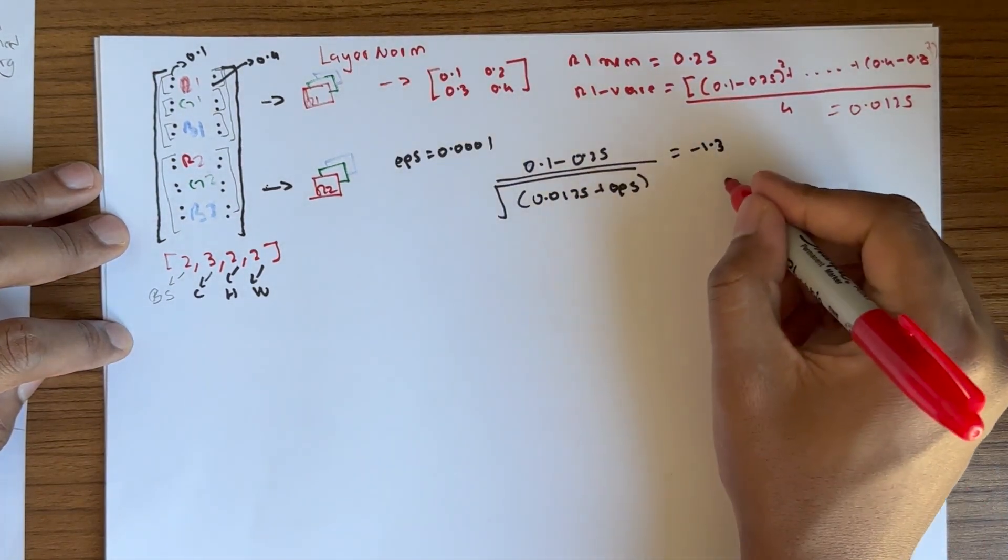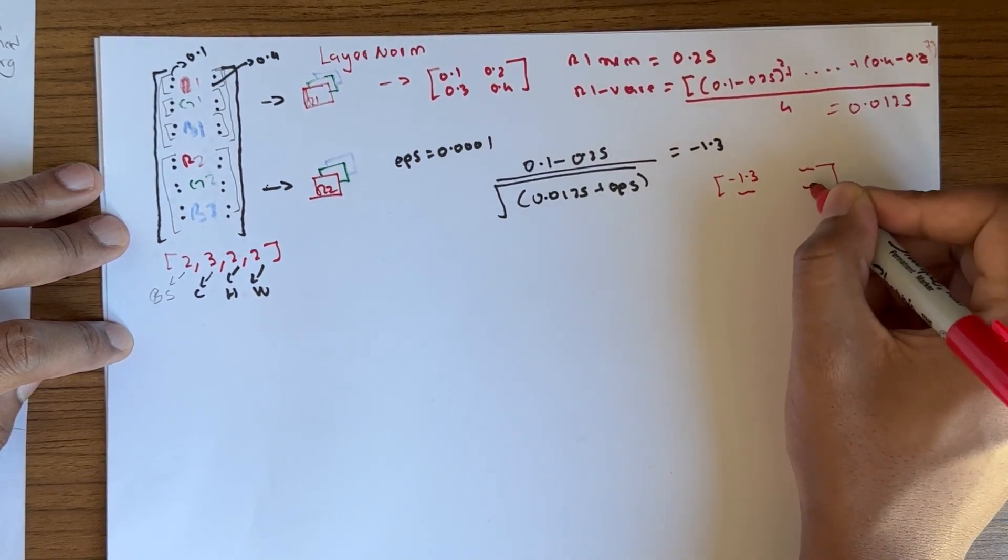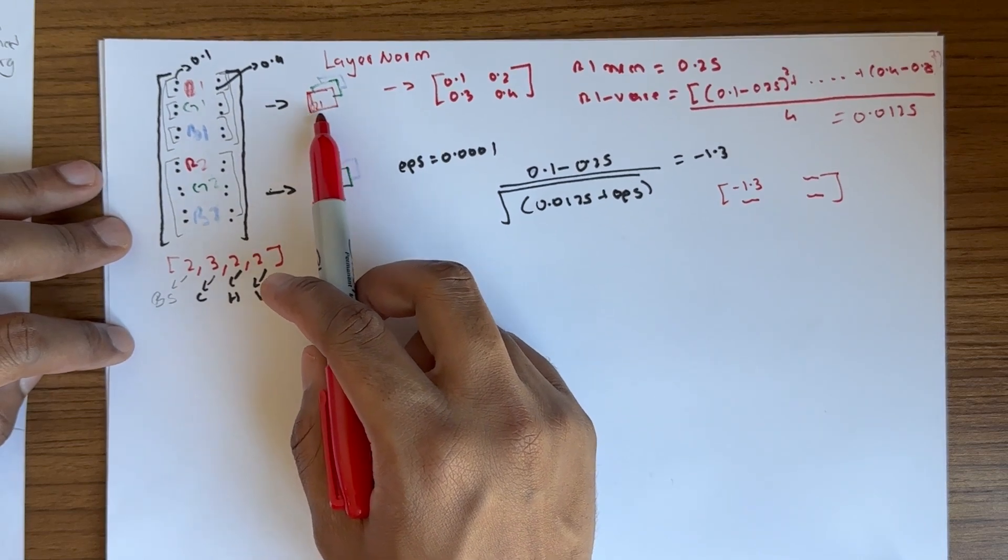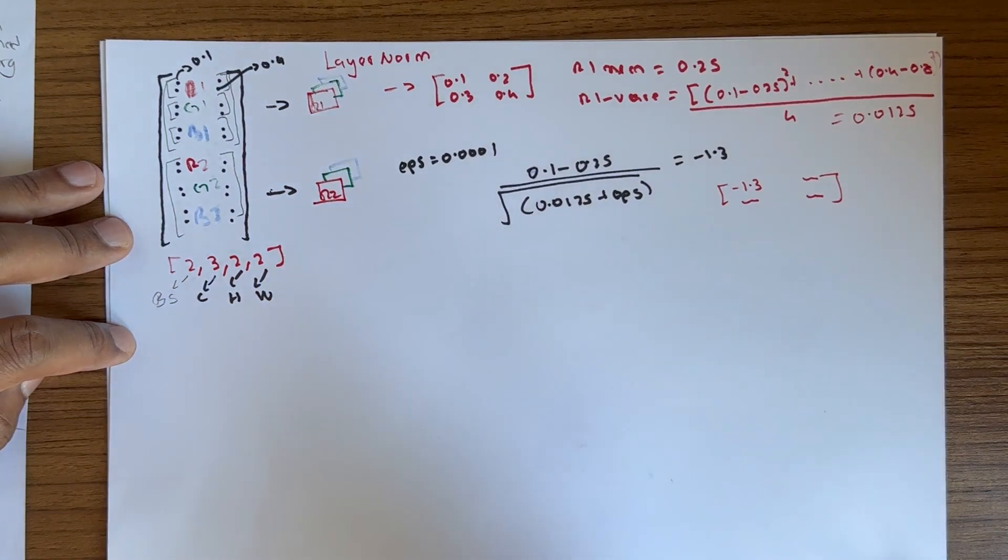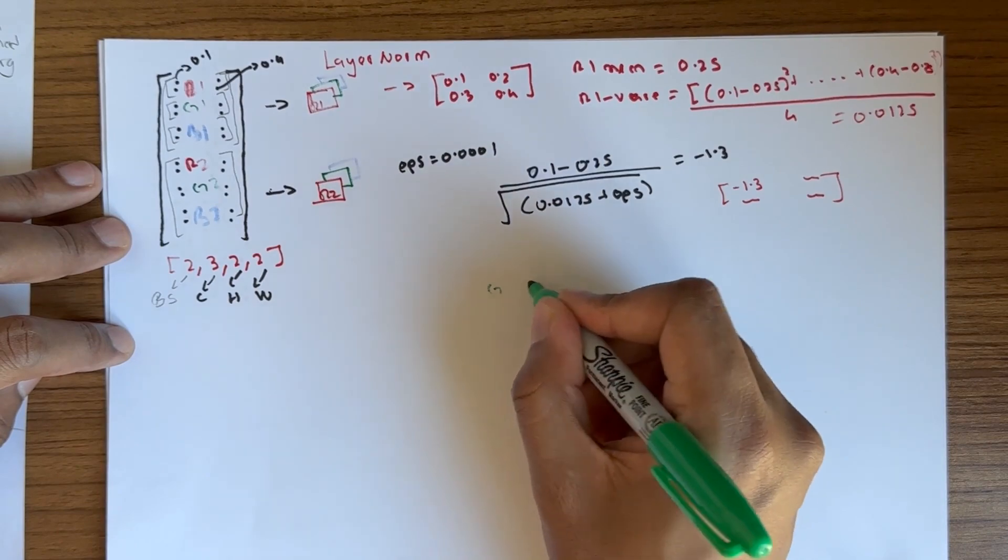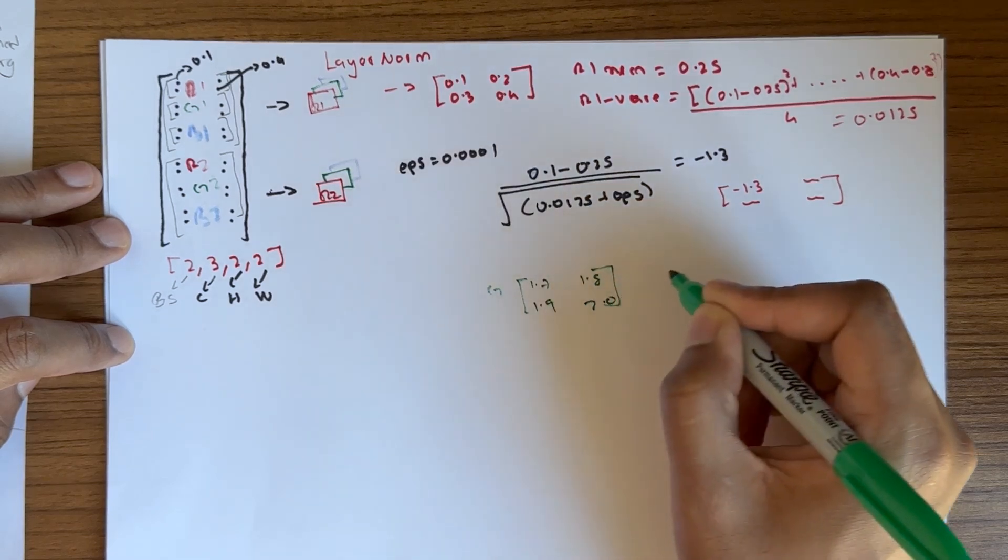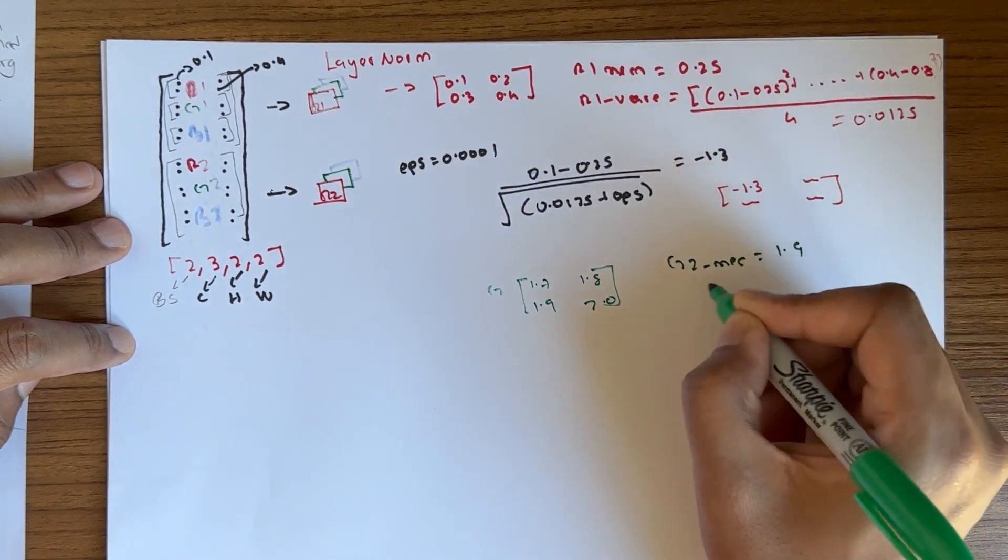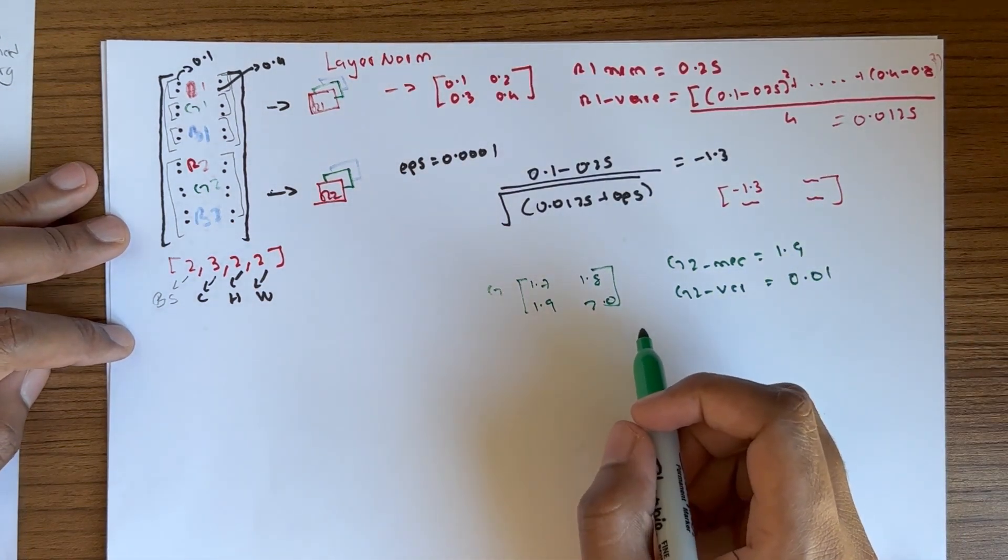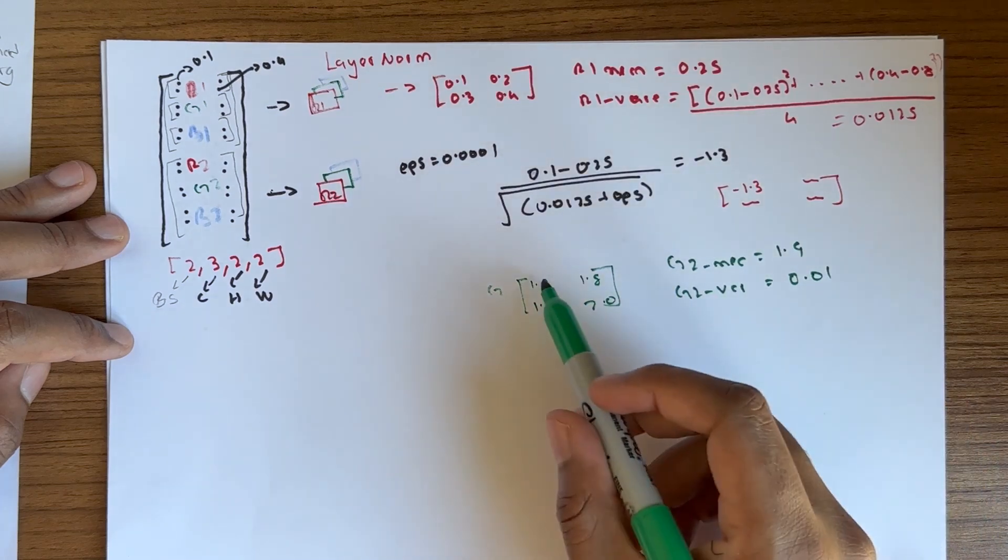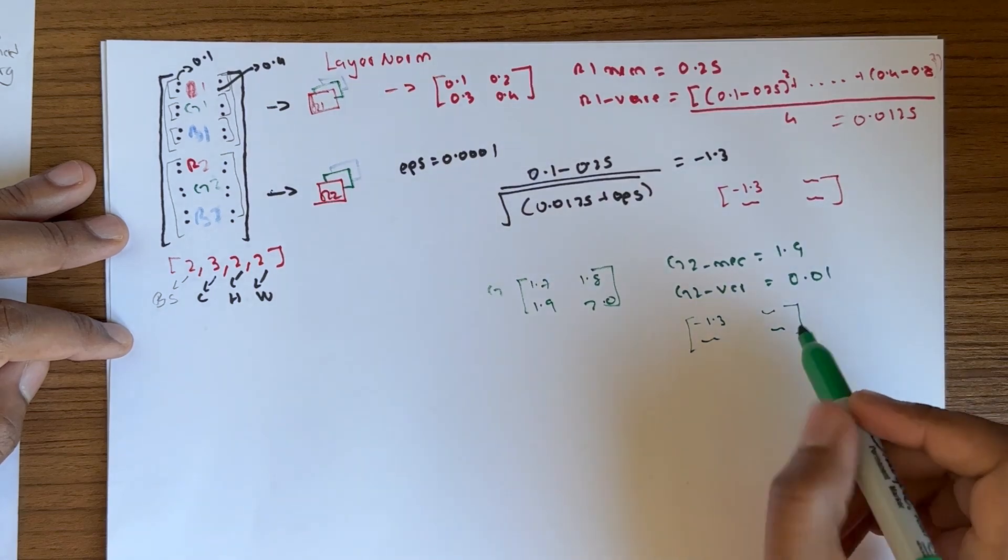After normalizing, you end up with a tensor with normalized values like minus 1.30. We repeat this procedure six times for all channels. Let's try the green channel G2. G2 is a tensor of 2 by 2 with values 1.7, 1.8, 1.9, 2.0. We compute G2 mean which is 1.9, and G2 variance which is 0.01. Using these, you can normalize all the values to get a 2 by 2 tensor.